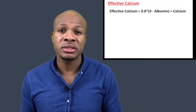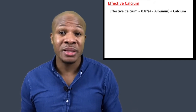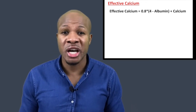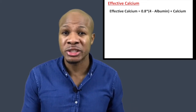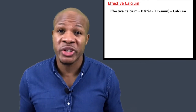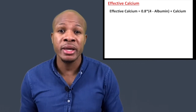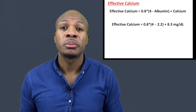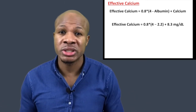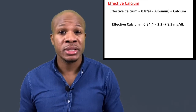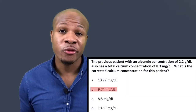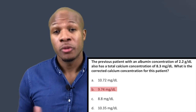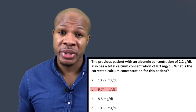The equation for corrected calcium is: 0.8 times (4 minus the patient's albumin concentration) plus the patient's actual calcium concentration. Plugging in: 0.8 times (4 minus 2.2) plus 8.3. When we calculate this, we get 9.74 milligrams per deciliter. The answer is answer choice B: 9.74.